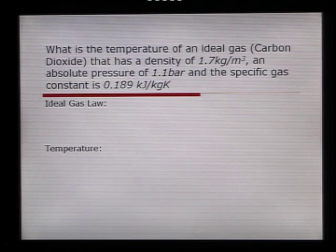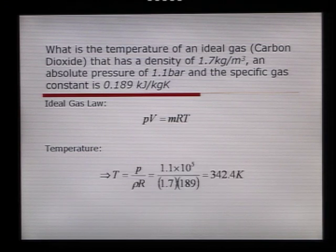Here's a quick example of how to apply the ideal gas law. The question reads, what is the temperature of an ideal gas, in this case carbon dioxide, that has a density of 1.7 kg per meter cubed and an absolute pressure of 1.1 bar, and a specific gas constant of 0.189 kJ per kilogram Kelvin. The ideal gas law states that PV is equal to MRT, but this can be rearranged to find that the temperature is equal to the pressure divided by the density and also divided by the ideal gas constant.